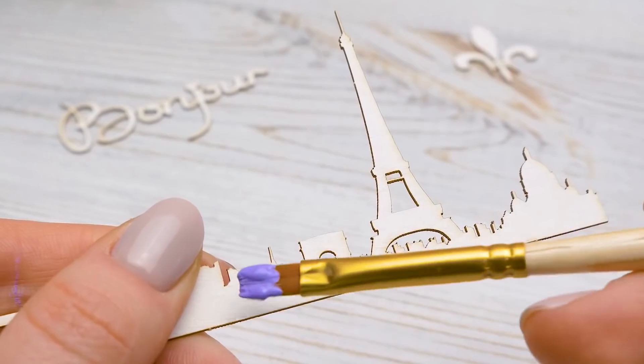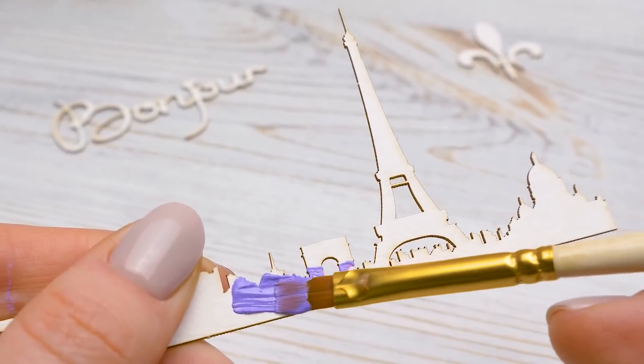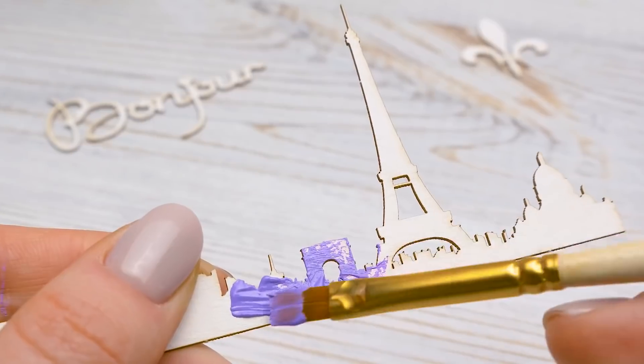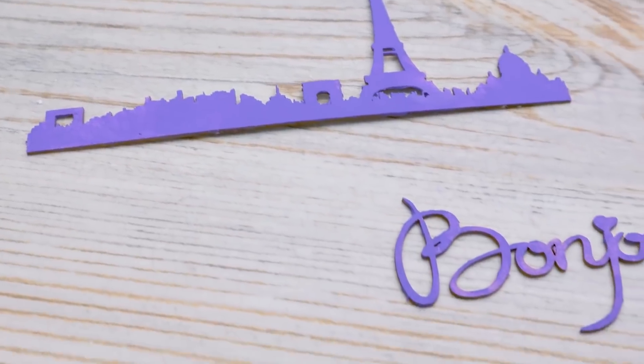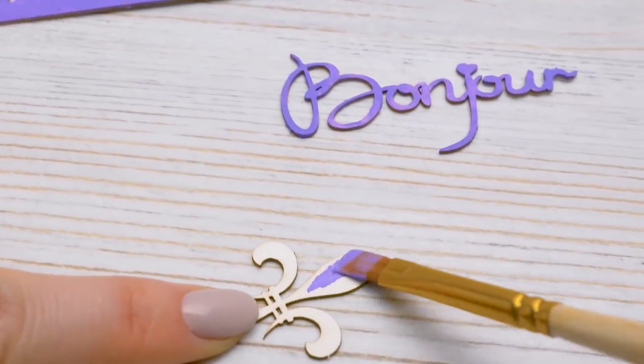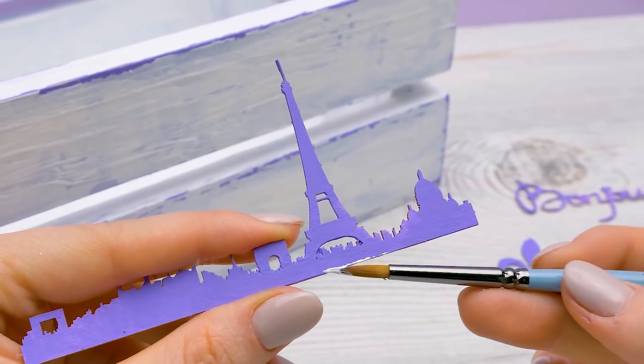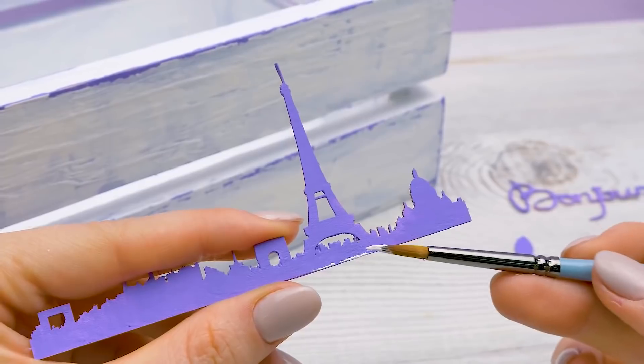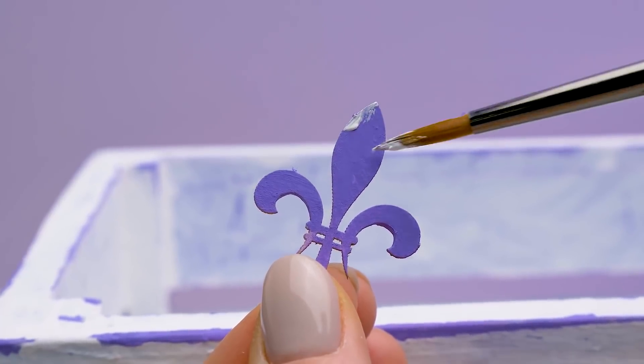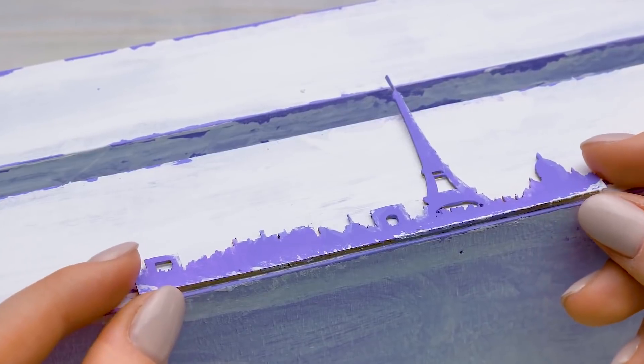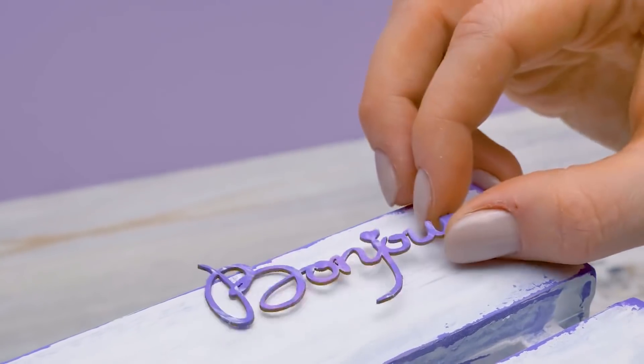I'll paint these chipboard parts lavender. And apply a little bit of white paint with a round brush.